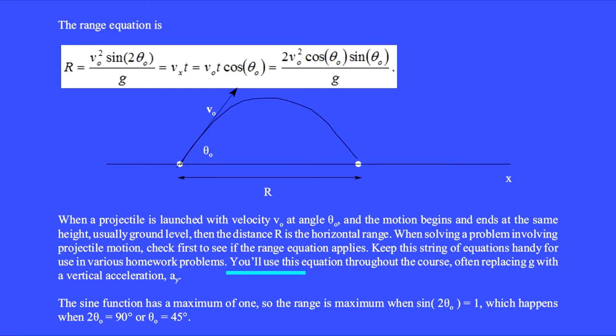You'll use this equation throughout the course, often replacing g with a vertical acceleration a_y. The sine function has a maximum of 1, so the range is maximum when sin(2θ) = 1, which happens when 2θ = 90° or θ₀ = 45°.